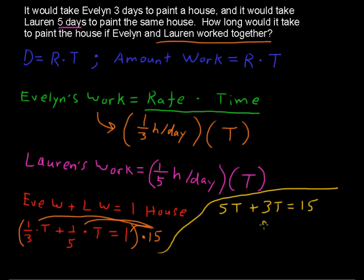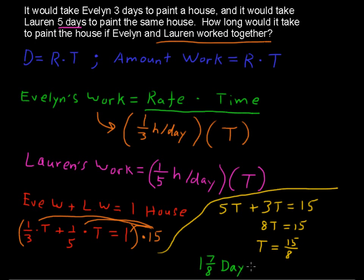So quickly, 8t equals 15, and t equals 15 over 8. In other words, it would take 1 and 7/8 days — almost two days — to complete the one house if Evelyn and Lauren were working together.